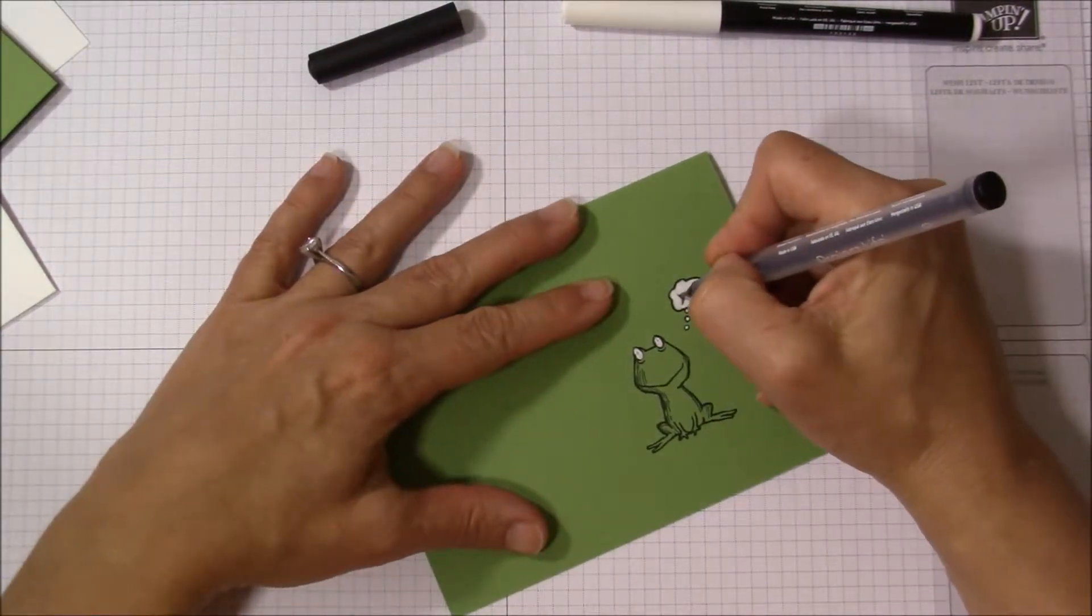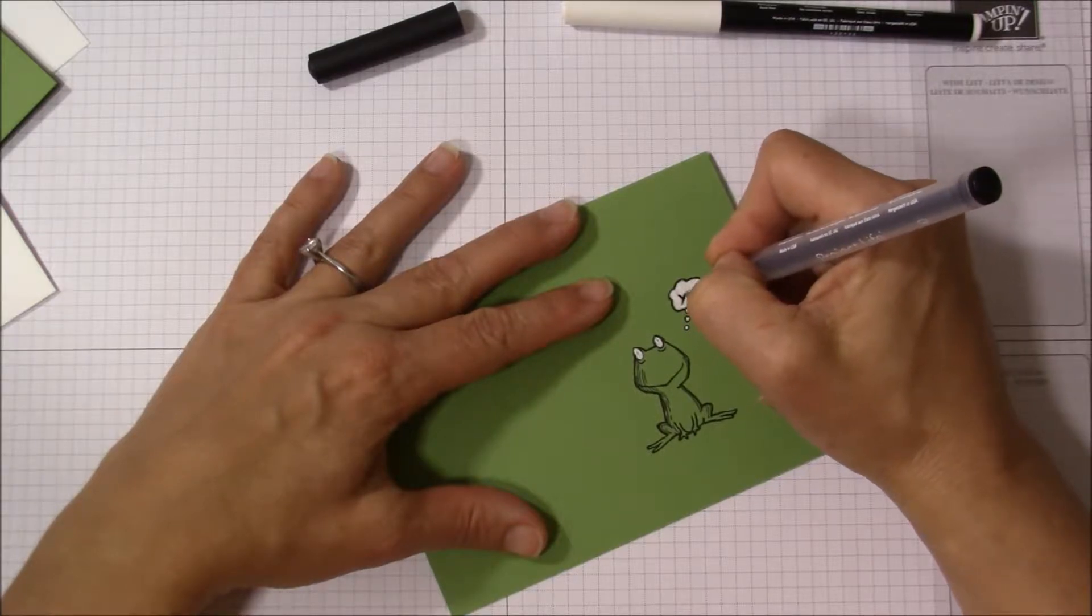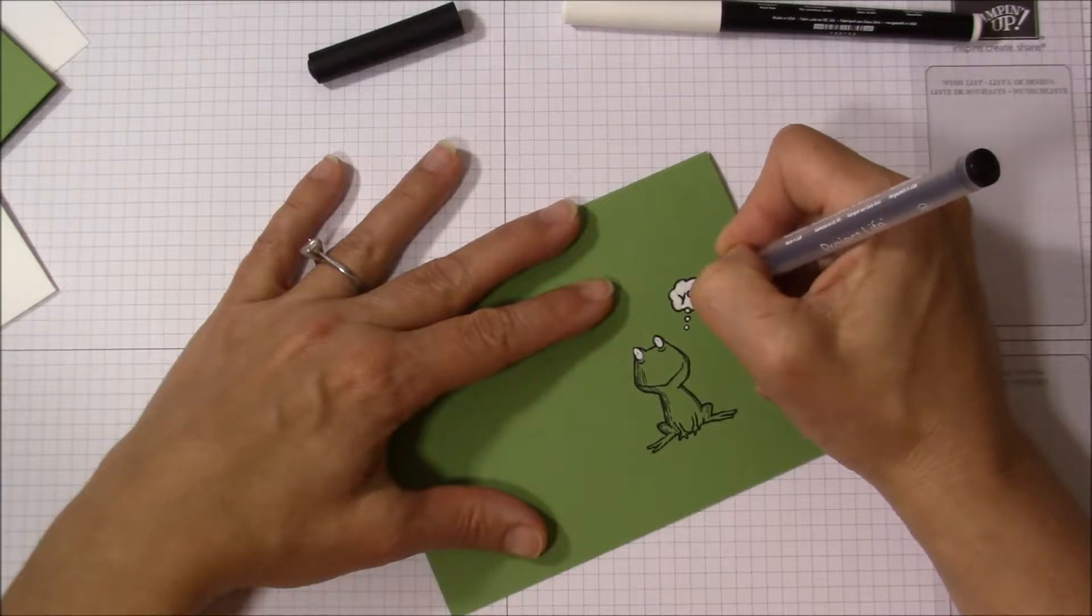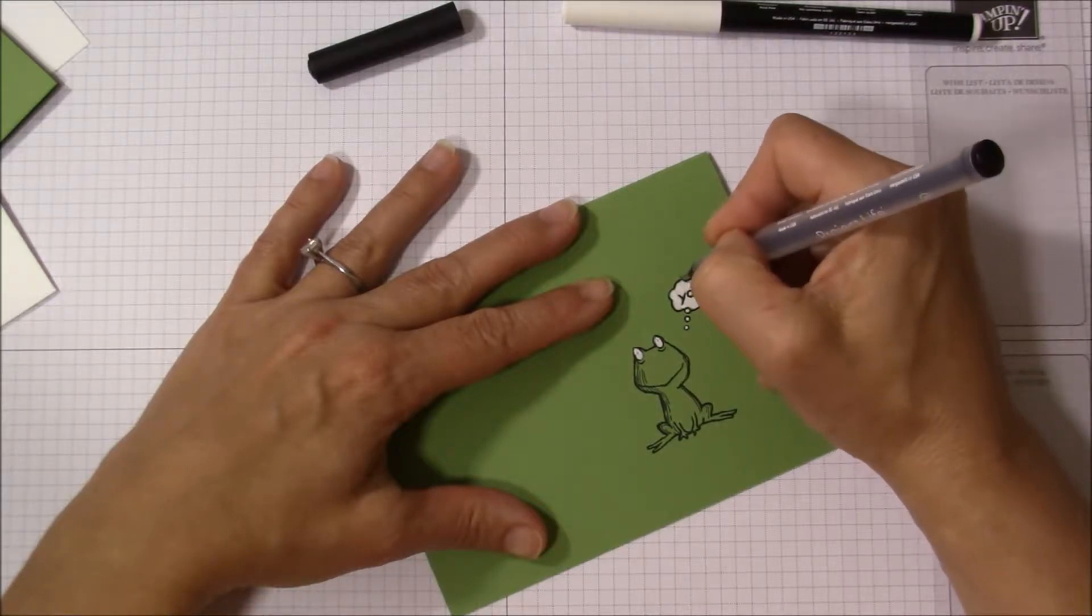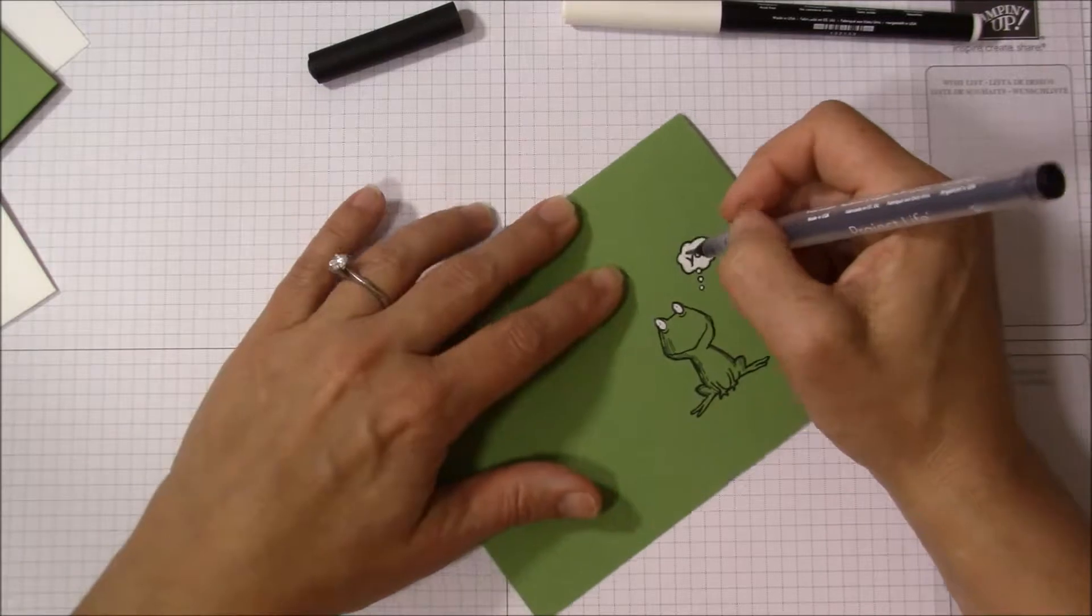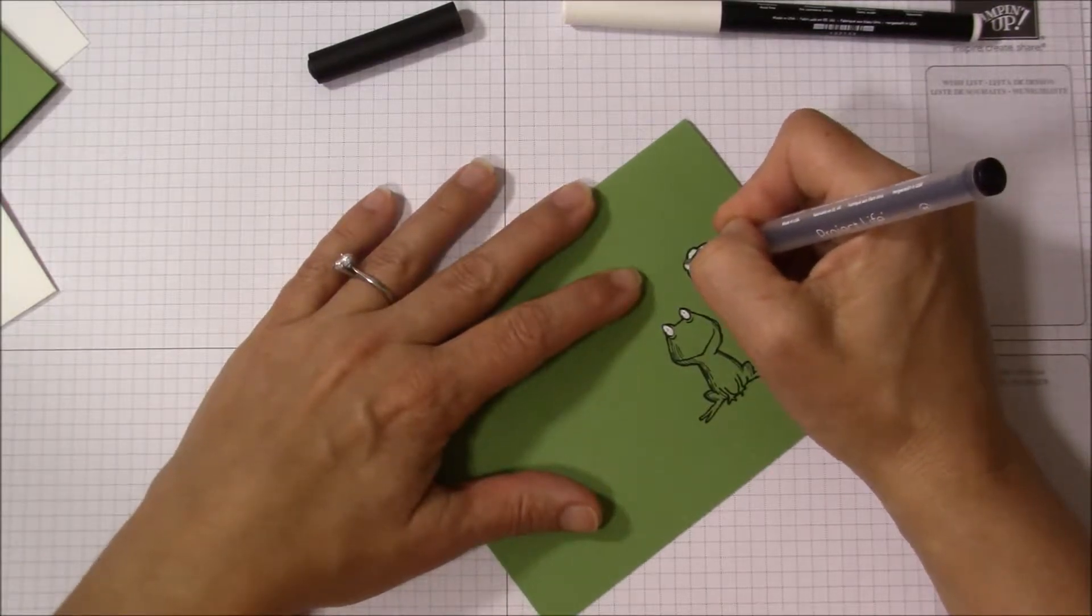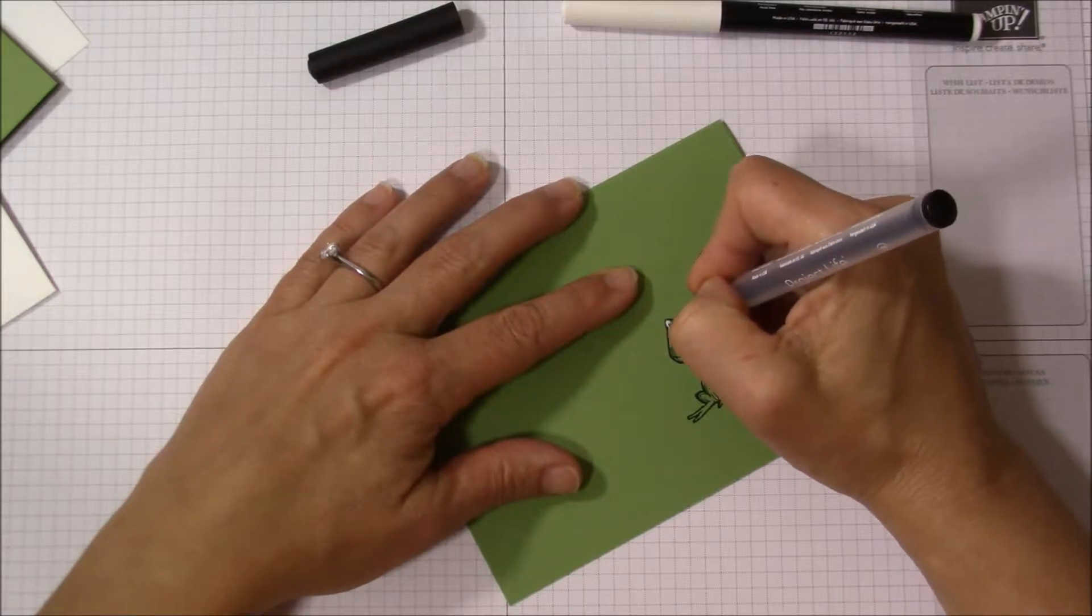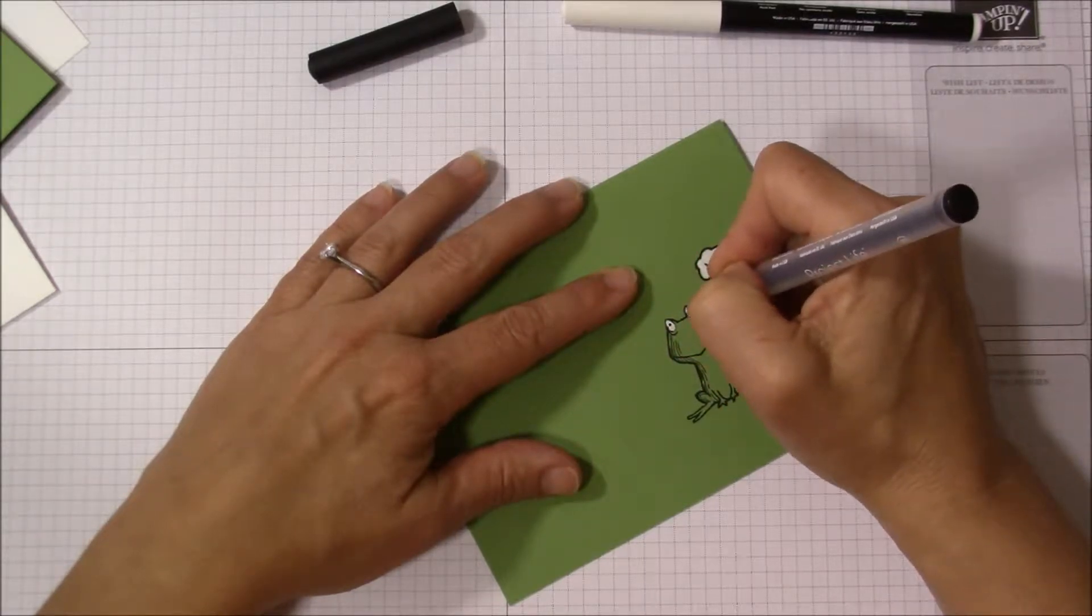So just kind of dab at it. All right, and now trace wherever it is that you would like the black line to be darker, definitely on his eyes.